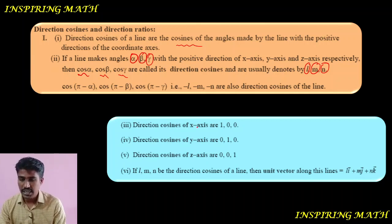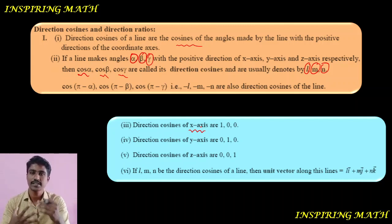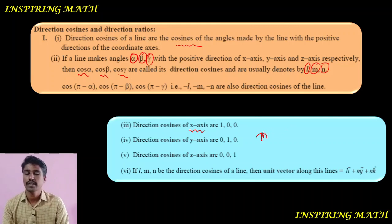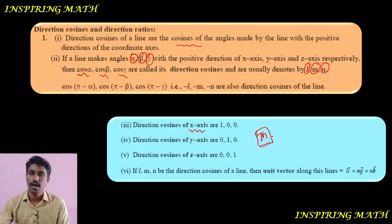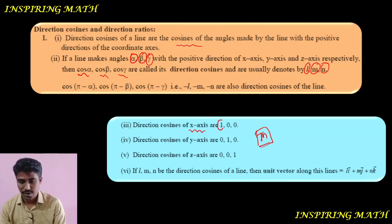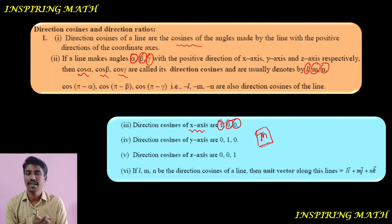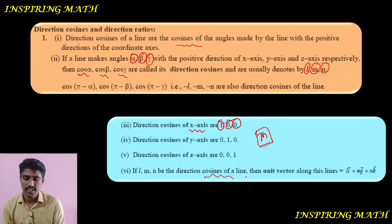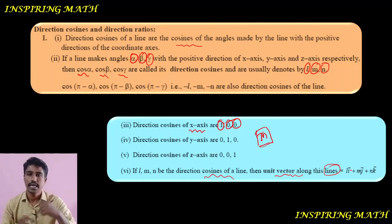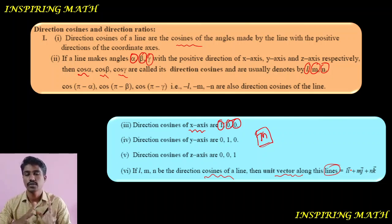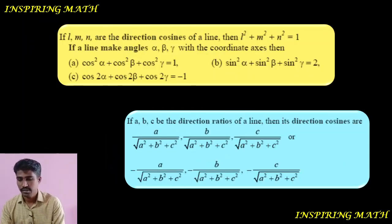Next point: direction cosines of the x-axis. This is important for 1-mark questions. The direction cosines of x-axis are 1, 0, 0. The direction cosines of y-axis are 0, 1, 0. The direction cosines of z-axis are 0, 0, 1. If l, m, n are the direction cosines of a line, then the unit vector along this line is equal to l·î + m·ĵ + n·k̂.